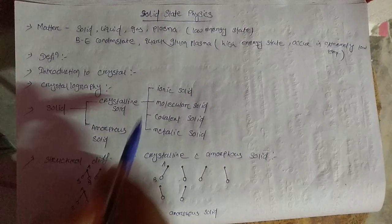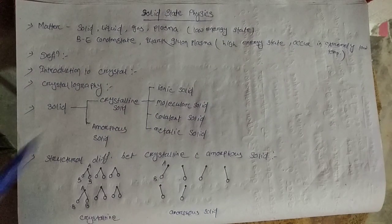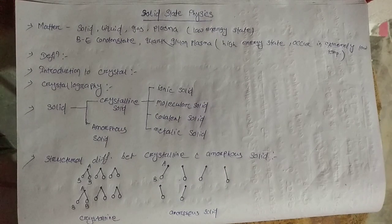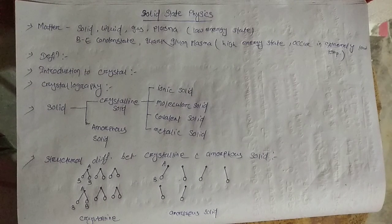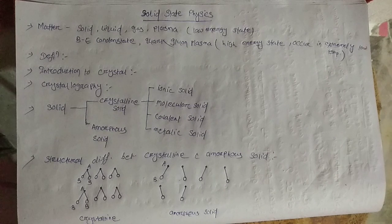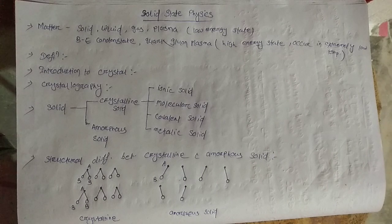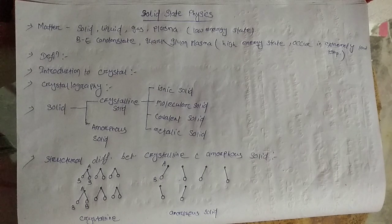The next category is molecular solids. As the name suggests, molecular solids are solids consisting of molecules. They are further divided into three types: non-polar molecular solids, polar molecular solids, and hydrogen-bonded molecular solids.